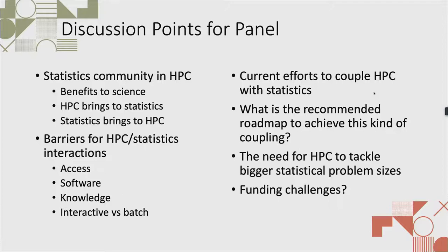Absolutely — this is done already, depending on the mission of the particular supercomputing facility. At Oak Ridge, we are capability computing, so the largest-scale problems come to us, and we are tuned to that type of community and those types of problems. But there are other HPC centers that are capacity computing and better suited to what you described. Having an ecosystem that supports all of these flavors is what is important for the scientific community.